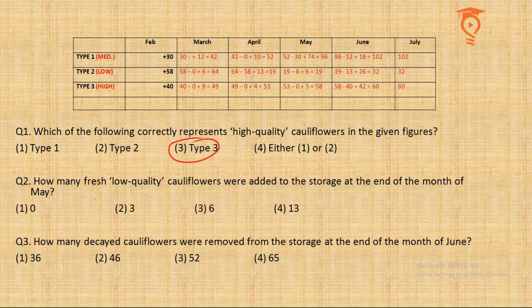Question 2 — how many fresh low quality cauliflowers were added at the end of the month of May? Looking at May for low quality: 6 were added. So the third option becomes the answer.